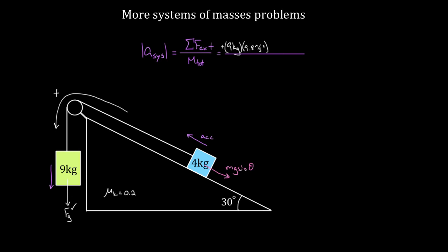If that doesn't make sense, go back and look at the videos or article on inclines, and you'll see that the component of gravity pointing down an incline parallel to the surface is equal to mg sine theta. So I'm gonna subtract four kilograms times 9.8 meters per second squared times sine 30 degrees. There's one more force that tries to prevent this system from moving — the force of friction.